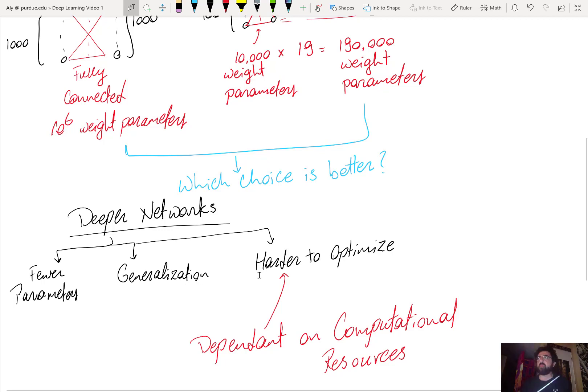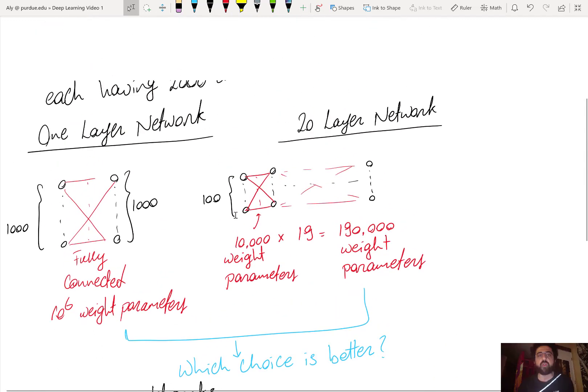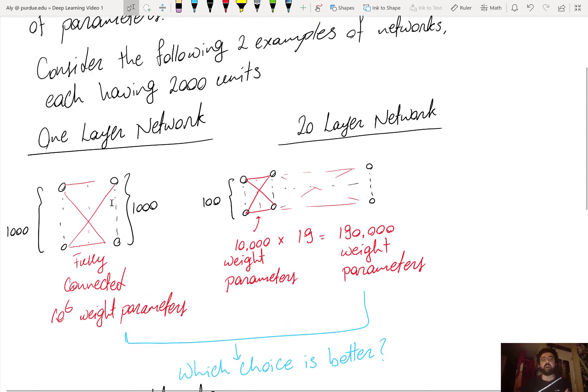But that also makes it harder to optimize. So imagine this 2,000 neuron example. Here when I have one layer between 1,000 and 1,000, this is a 1,000,000 dimensional space of parameters, the 1,000,000 parameters here. Here I have a much lesser number of parameters. So the dimensionality of the hypothesis space is much smaller.